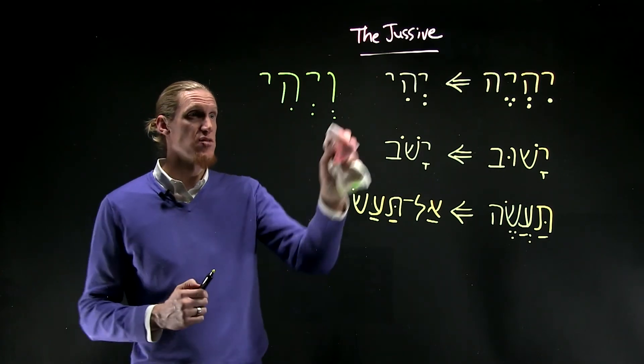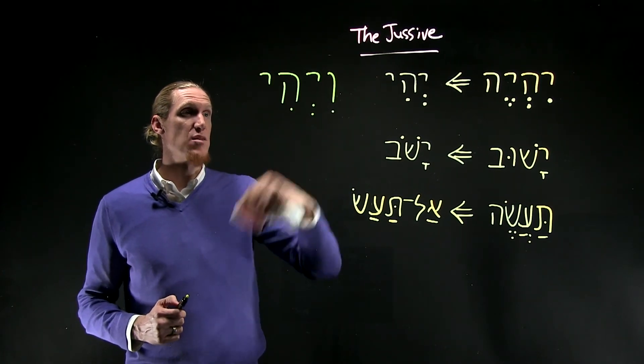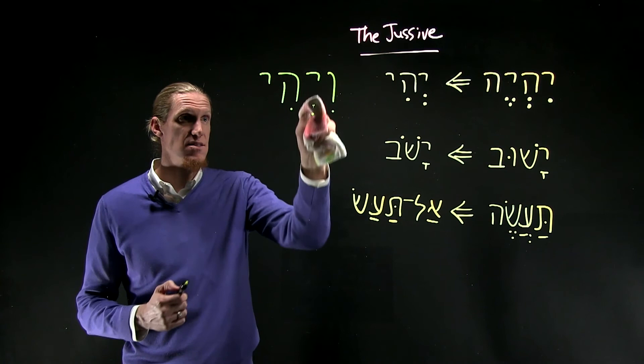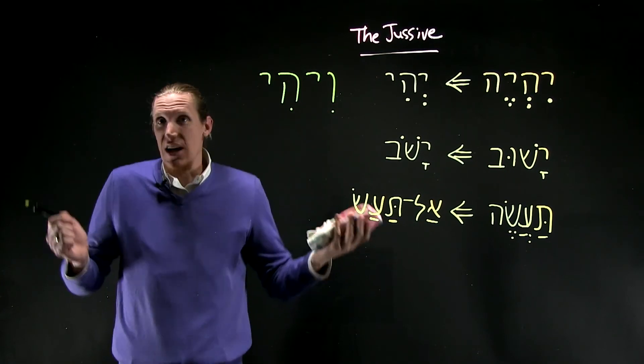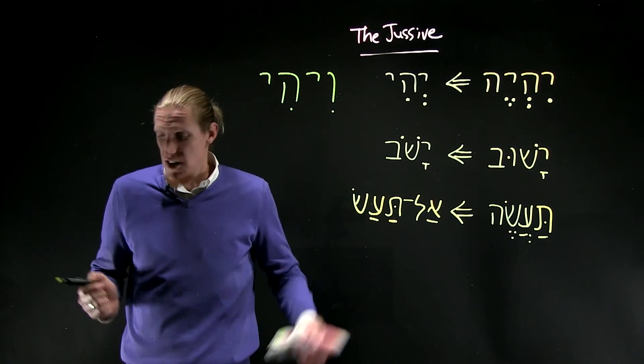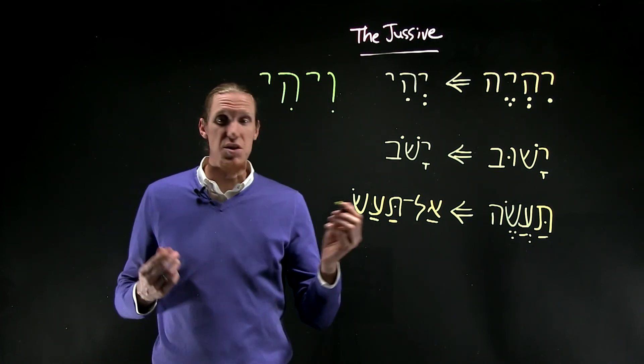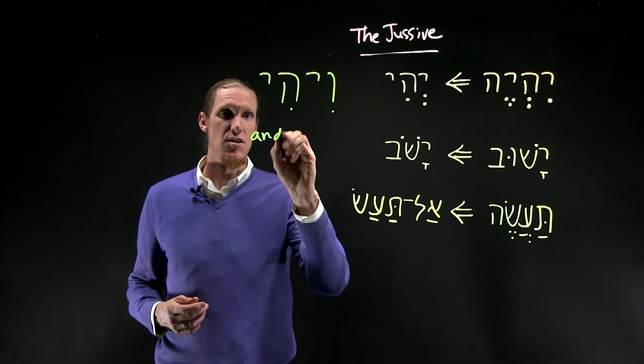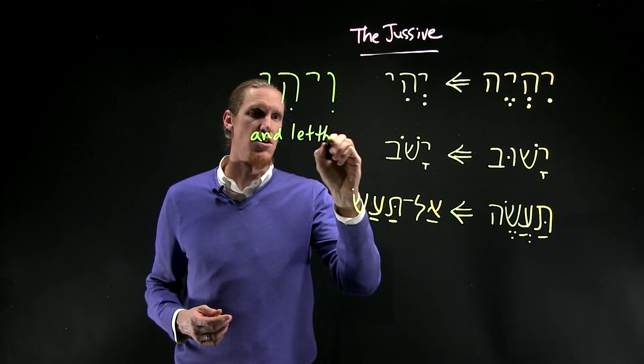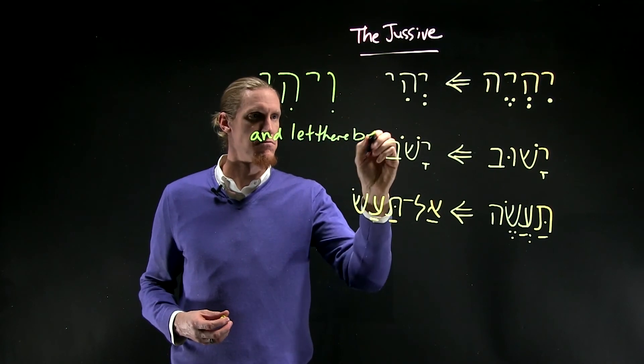And so what happens is the first sheva becomes a hirik, and in this case the second sheva just disappears. And so you're left with vhi, which simply means and let there be.